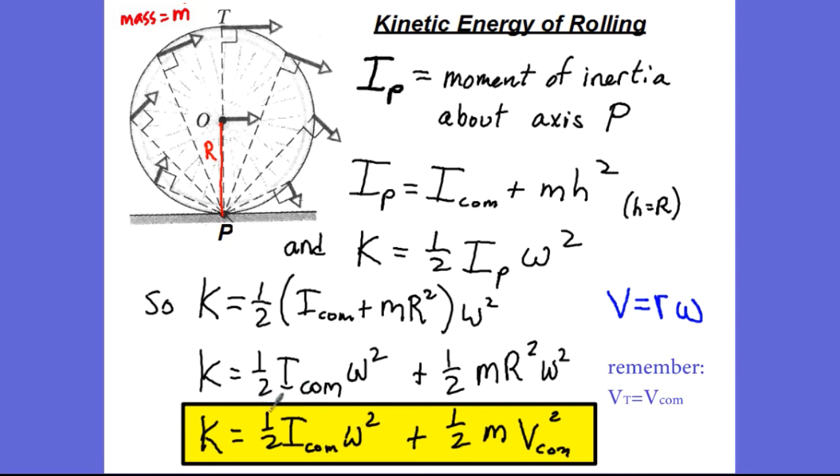We see here one-half I com omega squared—that is the rotational energy about the center of mass. And one-half m v com squared is the translational kinetic energy of the wheel. In other words, for a rolling wheel, we can think of its kinetic energy as the sum of its purely rotational kinetic energy plus its purely translational kinetic energy.